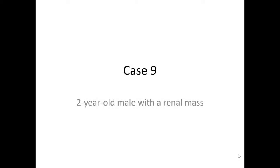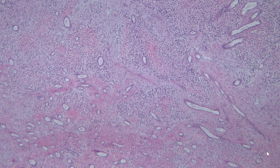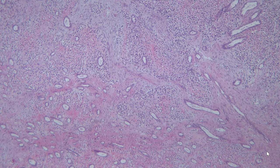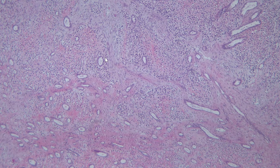Case 9: a two-year-old male with a renal mass. This is a low magnification appearance of the tumor, and the main thing that stands out from low mag is that we have an infiltrated process that's growing among renal tubules.